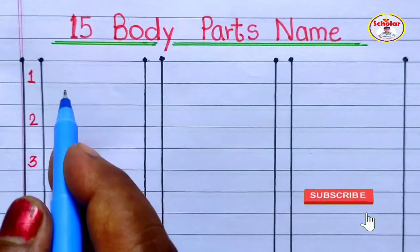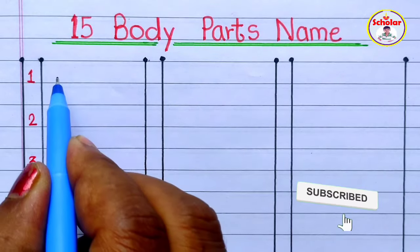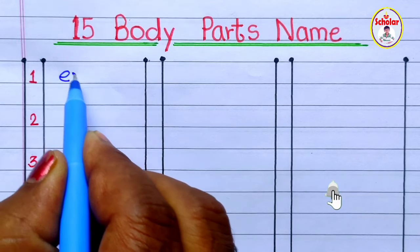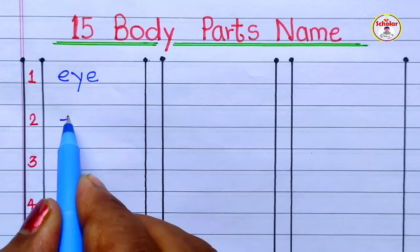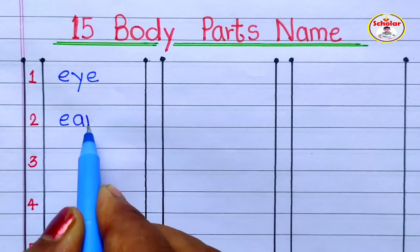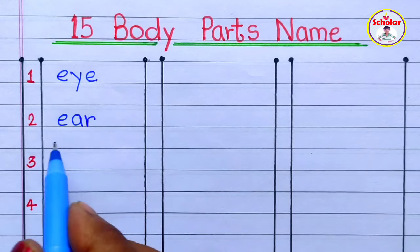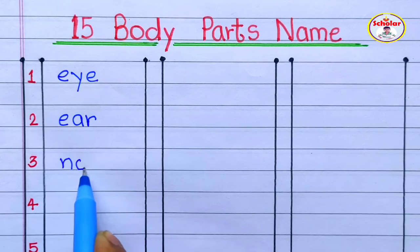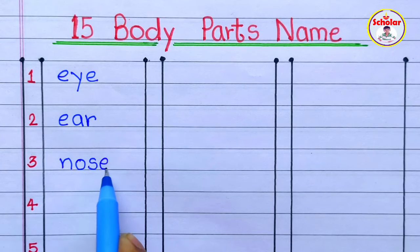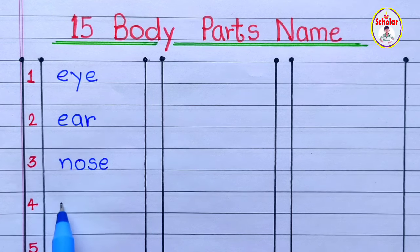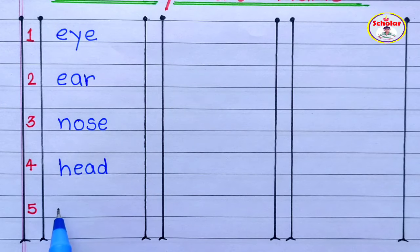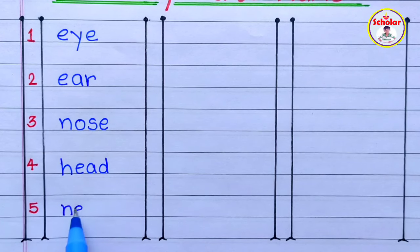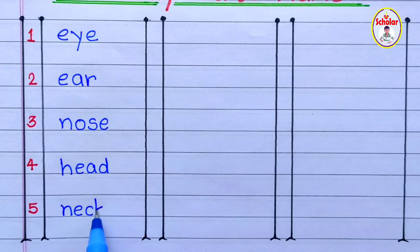Let's start. First name: E-Y-E Eye. E-A-R Ear. N-O-S-E Nose. H-A-I-R Hair. N-E-C-K Neck.